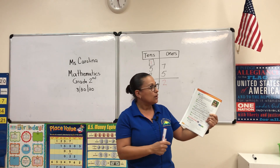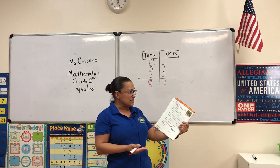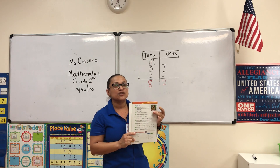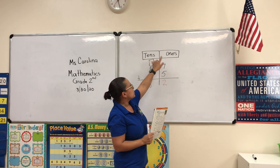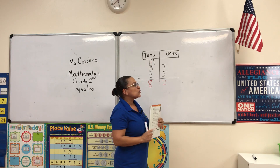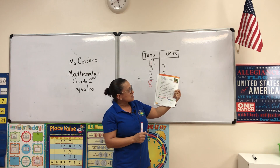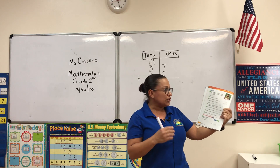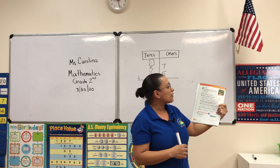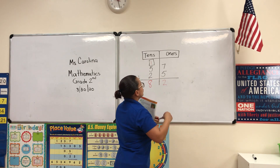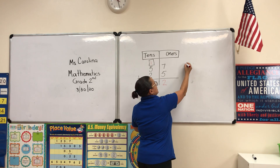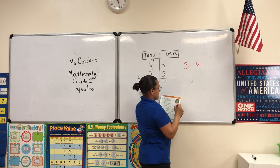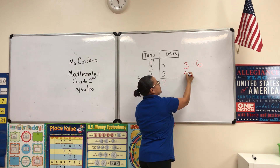We'll use tens and ones just like before. We don't have the chart labeled, but we already know that. We're going to add the ones and regroup if needed. So we set up 36 and 58 in the same way.